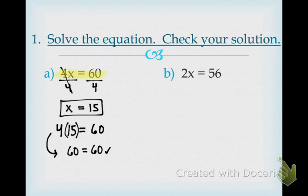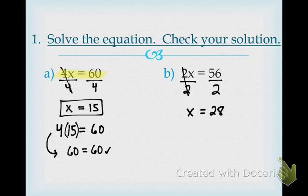Problem B says 2x equals 56. What is not allowing the variable to be by itself? A 2 — and what's the operation? Multiply by 2. I'm trying to get rid of it — what's the opposite of multiply by 2? Divide by 2. Whenever we're doing divide, use that fraction bar. 2 divided by 2 is 1, so it cancels out to plain old x. 56 divided by 2 is 28.